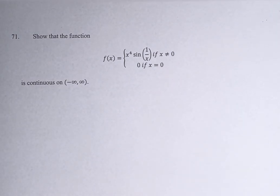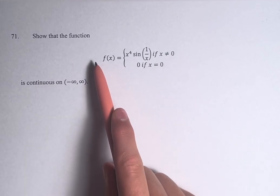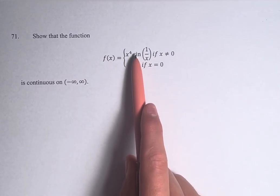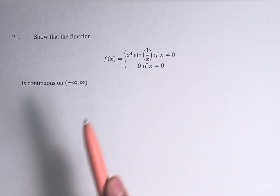Hello and welcome back to another video. In this problem, we're asked to show that the function is continuous on all real numbers, where we have f(x) equals x to the fourth times sine of 1 over x if x is not equal to 0, and 0 if x equals 0.